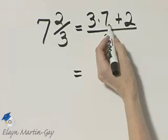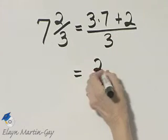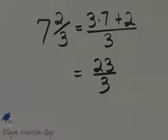3 times 7 is 21, plus 2, that's 23 over 3.